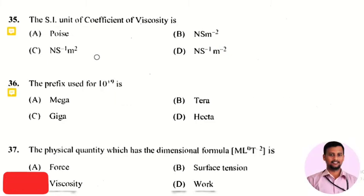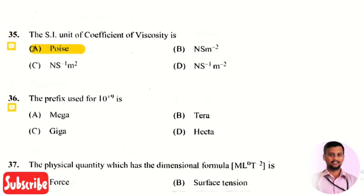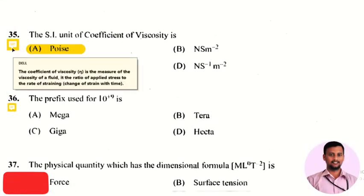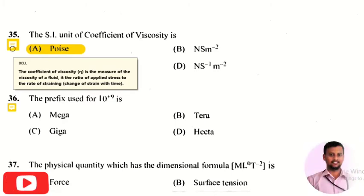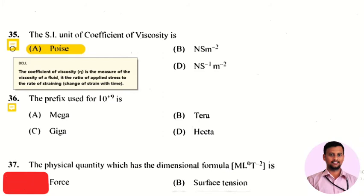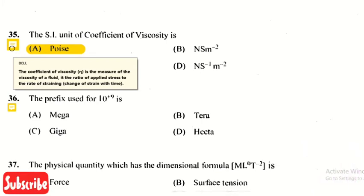The next question is: the SI unit of coefficient of viscosity? The right answer is option 1, that is poise. The coefficient of viscosity is the measure of viscosity of a fluid, defined as the ratio of applied stress to the rate of straining.